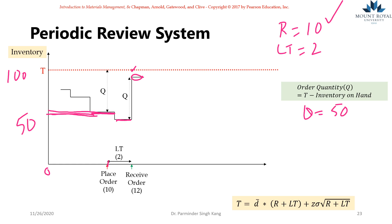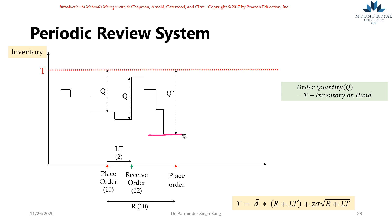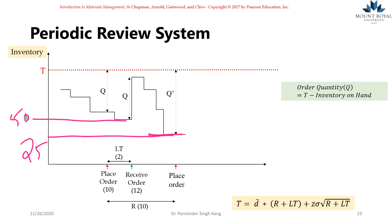As we move further and reach day 20 — the next review point after another 10-day review period — we place another order. How much we order again depends on what we physically have on hand. If on day 20 we have 25 units on hand and demand was high during that period, then Q = 100 − 25 = 75 units ordered from the supplier.